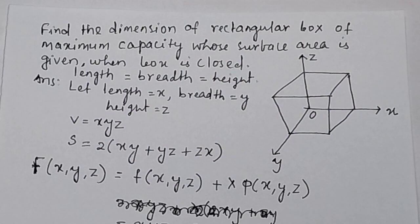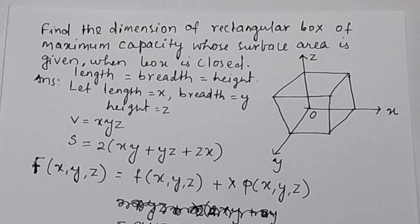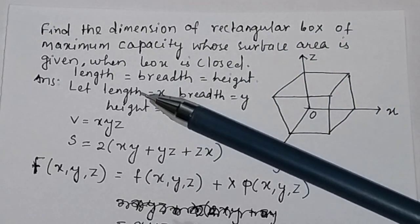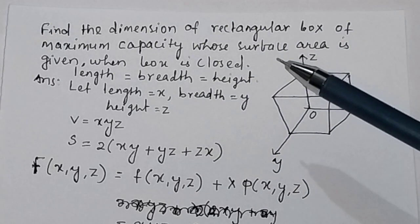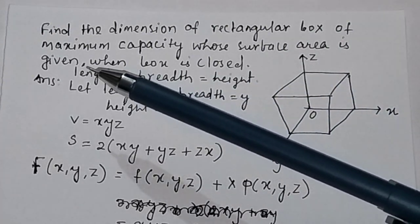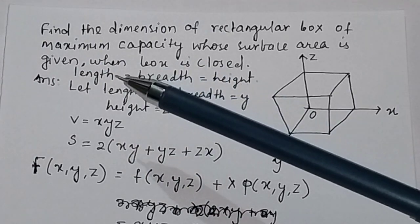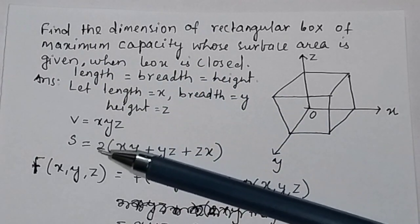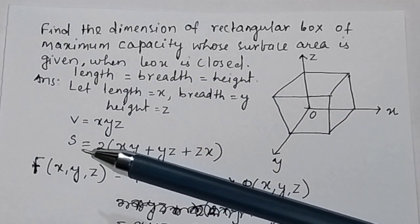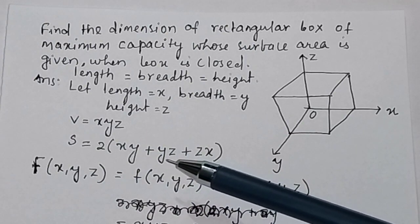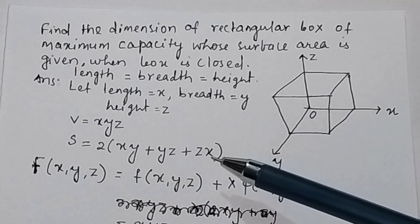Find the dimension of a rectangular box of maximum capacity whose surface area is given, when the box is closed, with length equal to breadth equal to height. We have to prove this, and we know the surface area of a rectangular box: S = 2(xy + yz + zx).